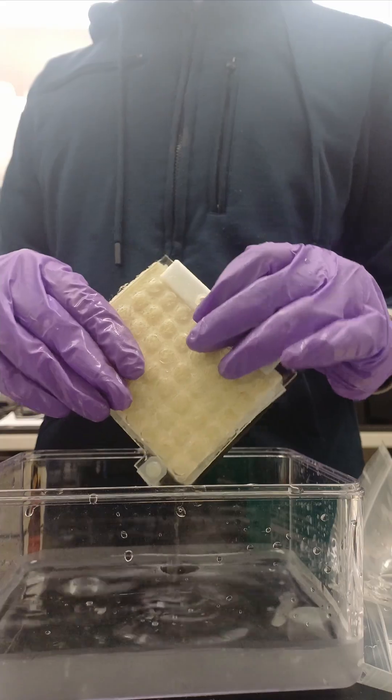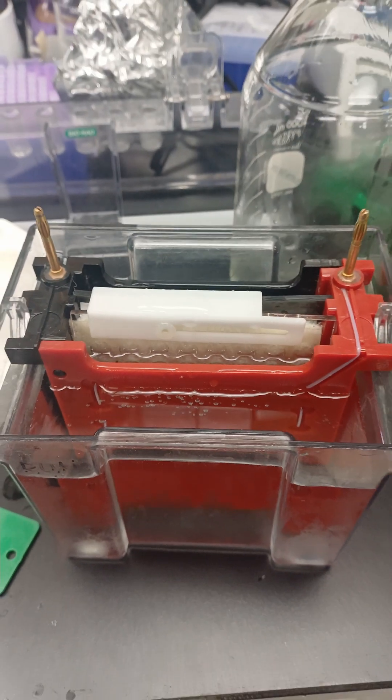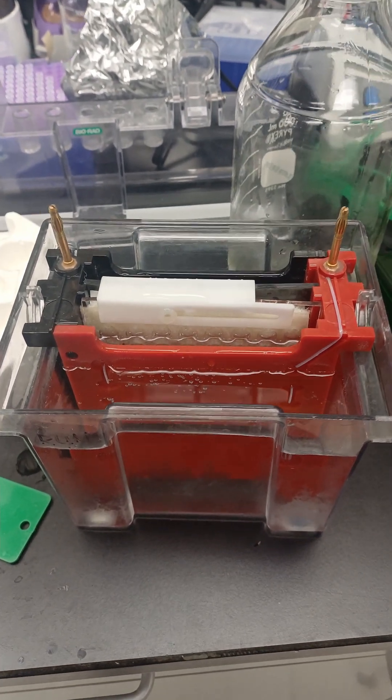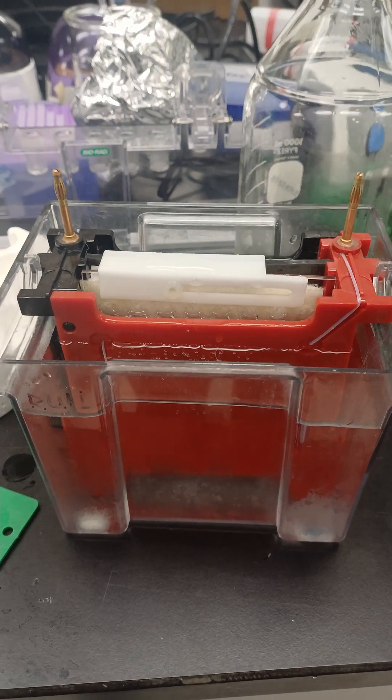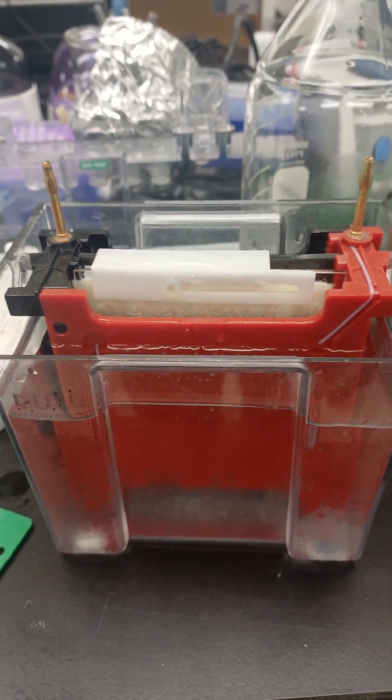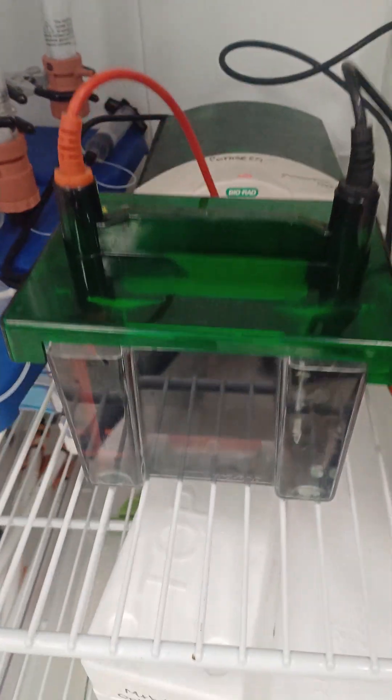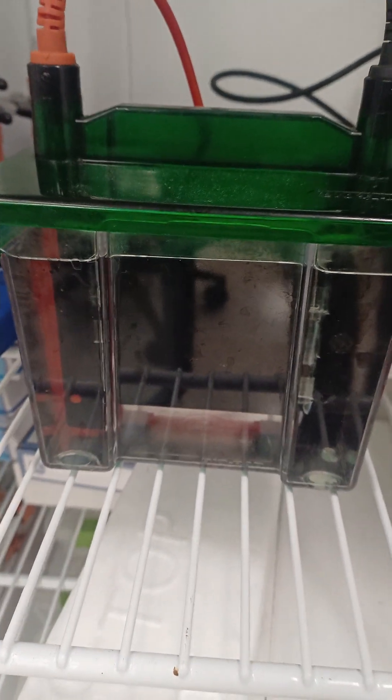Clamp the cassette and place it into an electrophoresis unit. Remember run towards red and since we want to transfer the protein from gel to the membrane, gel is on the black side and the membrane is on the red side. I am setting up an overnight transfer at 150 milliamps in the cold cabinet.